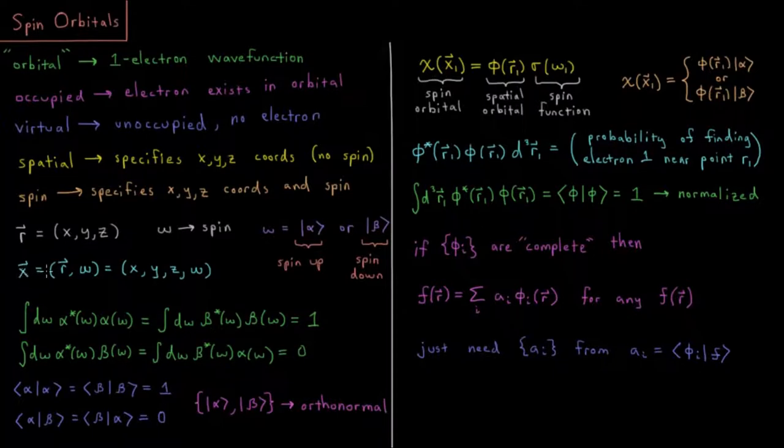The x vector would be the r vector with the omega appended to it. So x vector would be x, y, z, omega.